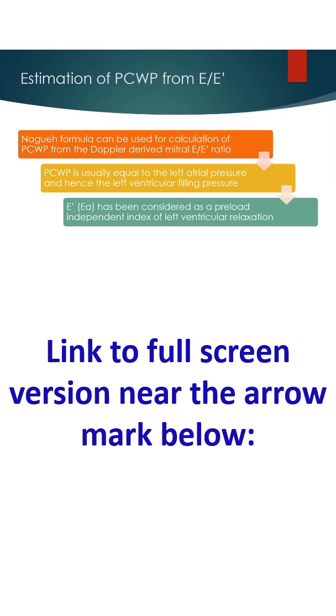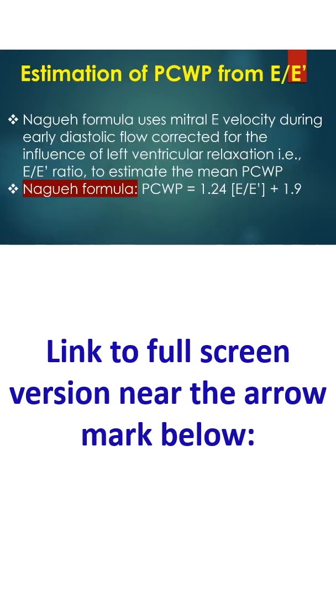PCWP is usually equal to the left atrial pressure and hence the left ventricular filling pressure. E' has been considered as a preload-independent index of left ventricular relaxation. Nagueh formula uses mitral E velocity during early diastolic flow corrected for the influence of left ventricular relaxation, that is E by E' ratio, to estimate the mean PCWP.